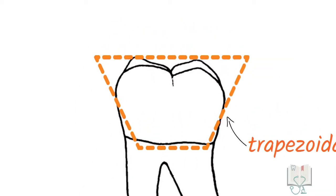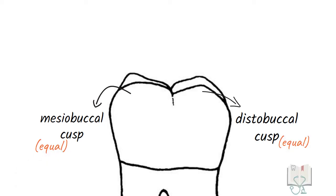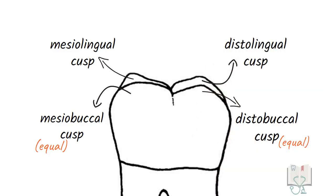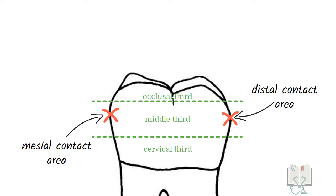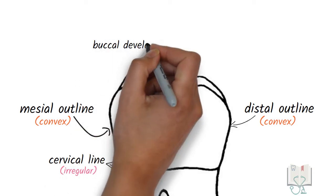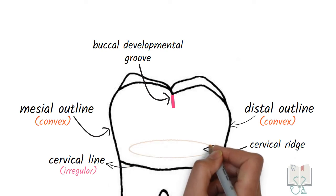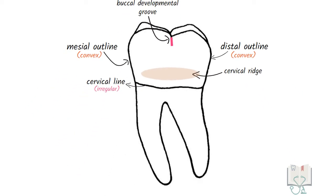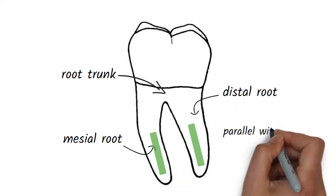The morphology of a tooth is studied under five aspects. Starting with the buccal aspect, the outline form of the crown is trapezoidal in shape. Both buccal cusps — mesiobuccal and distobuccal — are seen in front and are almost equal in size. Both lingual cusps are also seen partially. Both contact areas are in the middle third. The mesial and distal outlines are convex, however the cervical line is irregular. A buccal developmental groove runs between the two buccal cusps, and a faint cervical ridge runs mesiodistally in the cervical third. Both roots are visible, with the root trunk bifurcating into the mesial and distal roots, which are almost parallel to each other with a distal tilt.